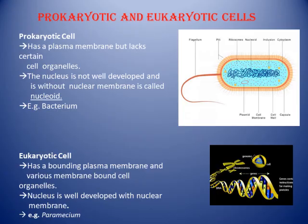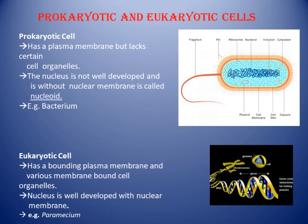In prokaryotic cells, the nucleus has a plasma membrane but no nuclear membrane — the nuclear material is not well-developed and is called the nucleoid, as seen in the diagram of bacteria. In eukaryotic cells, the nucleus is bounded by a nuclear membrane with all cell organelles nicely present. Examples of eukaryotic cells include paramecium and all plant and animal cells.